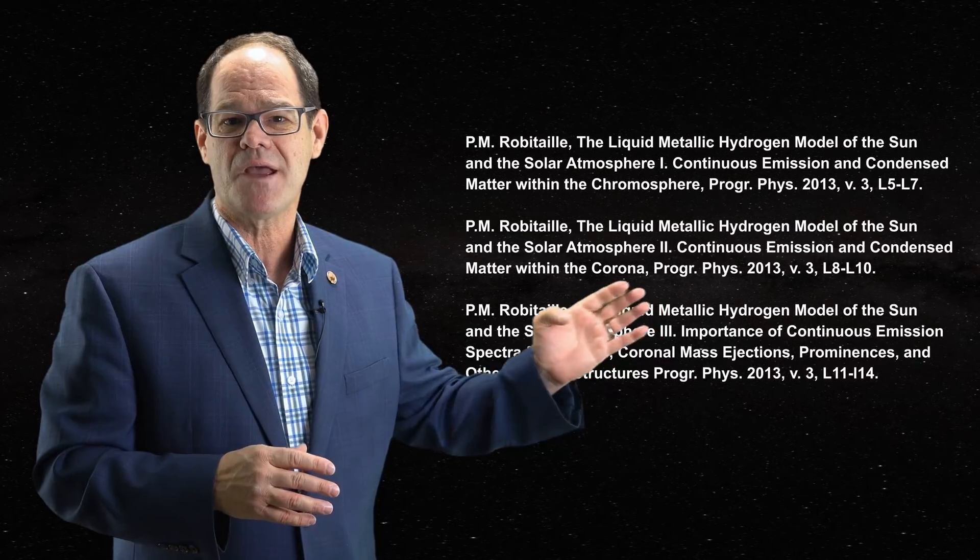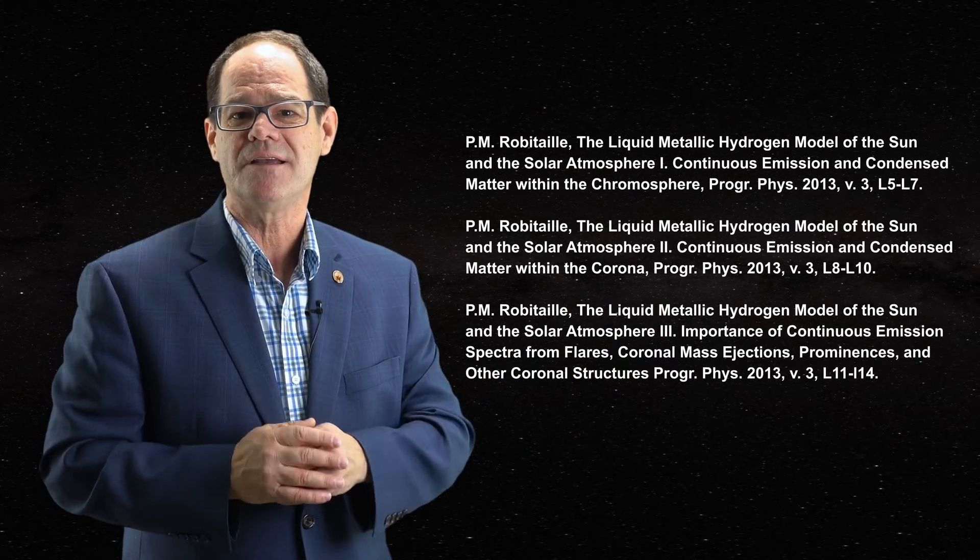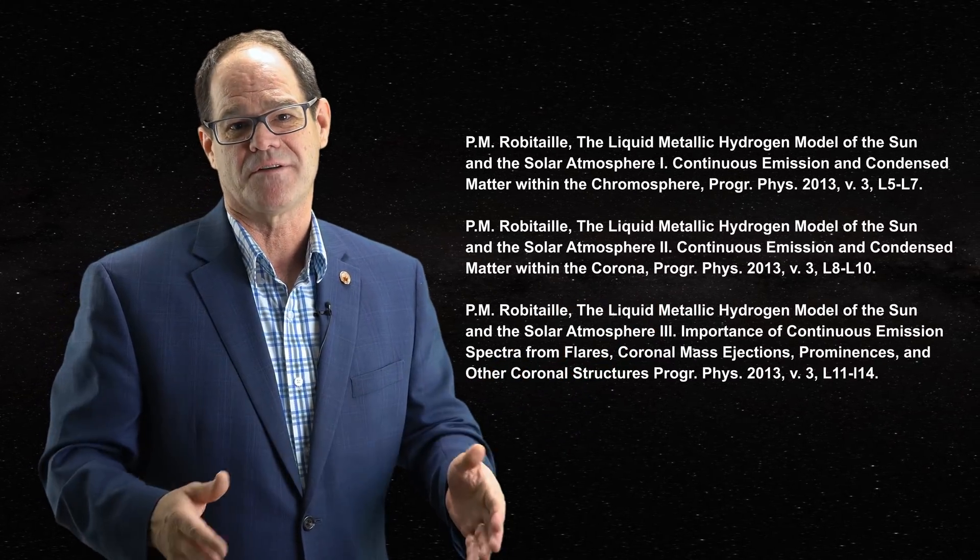Hello everyone and welcome to SkyScholar. Today I would like to discuss three lines of evidence from continuous spectra that the Sun is comprised of condensed matter. These have been described in detail in three papers linked in the description.